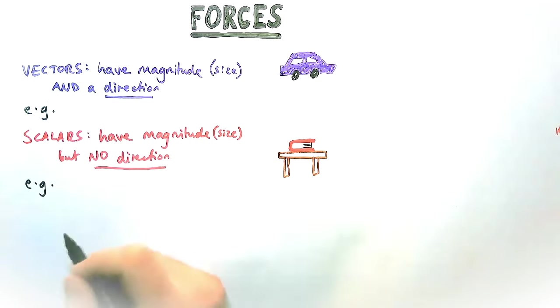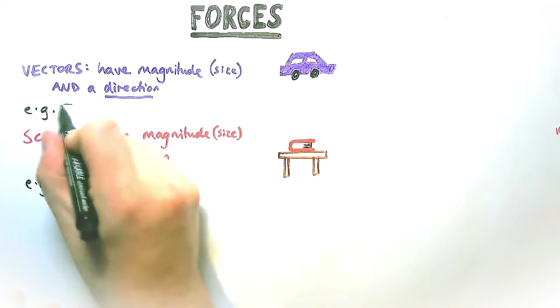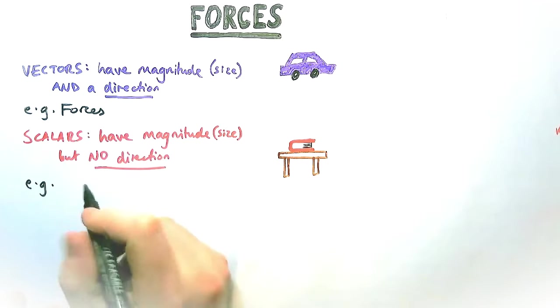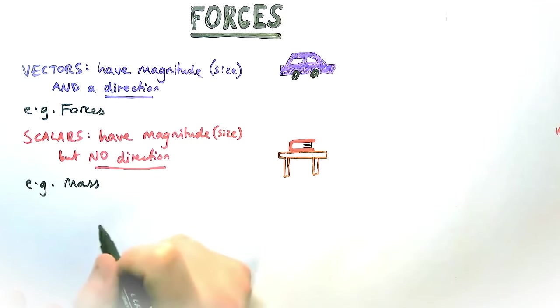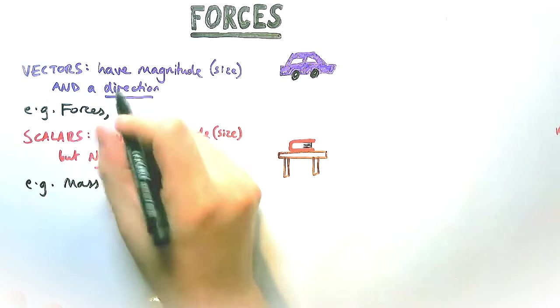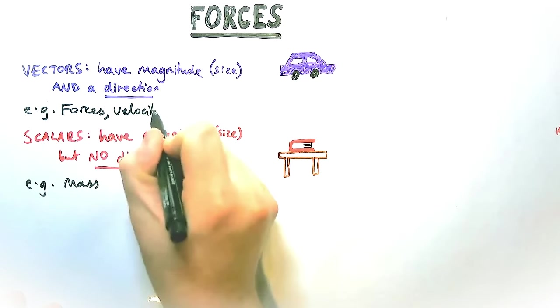For a vector, we've got force as our first example. It does need a direction, whereas something like mass doesn't need a direction. Something has a mass of 10 kilograms, it's not left or right, up or down, it just is.